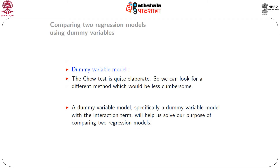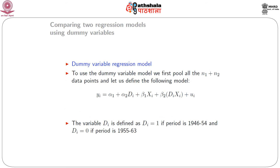This is an elaborate process involving fitting three separate regression equations, obtaining parameter estimates, and computing residual sums of squares. Instead, we will look at the dummy variable approach for comparing two regression models, which is much more convenient and does not require fitting as many regression equations. To use dummy variables, we first pool all n₁ and n₂ observations together and fit the regression: Y_i = α₁ + α₂D₁ + β₁X_i + β₂D₁X_i + u_i.